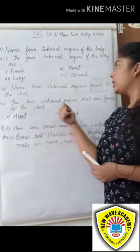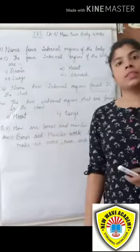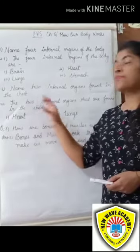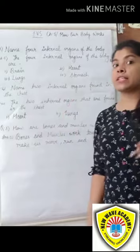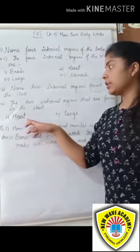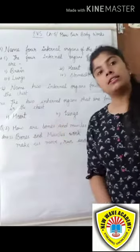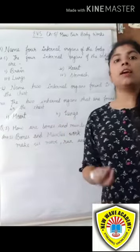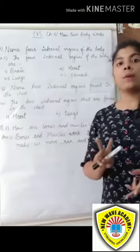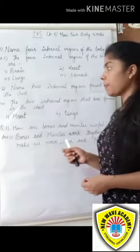The 2 internal organs found in the chest are: first, heart, and second, lungs. Heart and lungs — both of these are found in our chest.